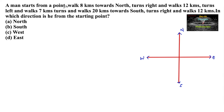A man starts from a point, walks 8 km towards north, turns right and walks 12 km, and again turns left and walks 7 km, turns and walks 20 km towards south, turns right and walks 12 km. In which direction is he from the starting point?